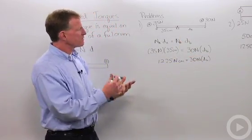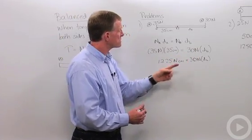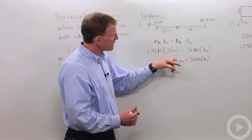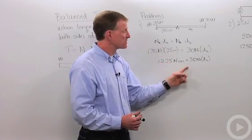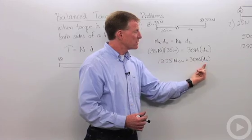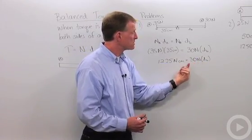Now I need to simplify this equation. I want to get rid of this. I'm going to multiply these two and get 1225 newton centimeters equals 30 newtons times the distance. Now, I need to simplify. So I want to get rid of my 30 newtons, dividing this by 30 newtons and this by 30 newtons.